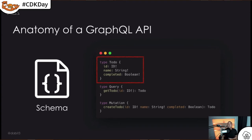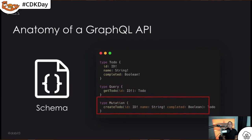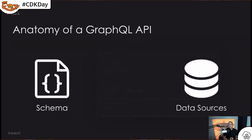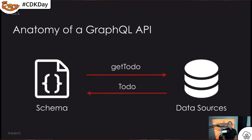If a field has an exclamation point, it's required; if it does not, it's nullable or optional. We have different operations like queries and mutations, which map to REST calls like GET, PUT, or POST. After we've defined our types and operations, we need data sources — where this data is coming from — and then operations that map to those data sources and bring data back in the response.